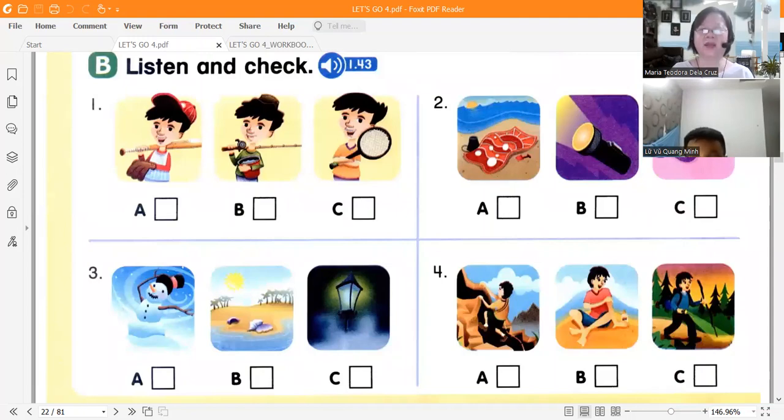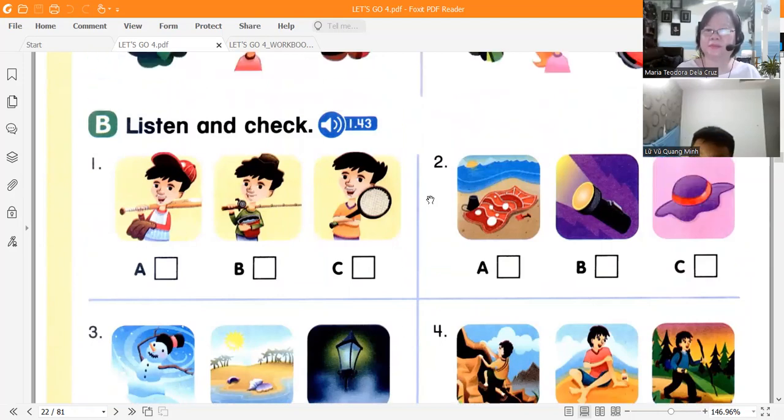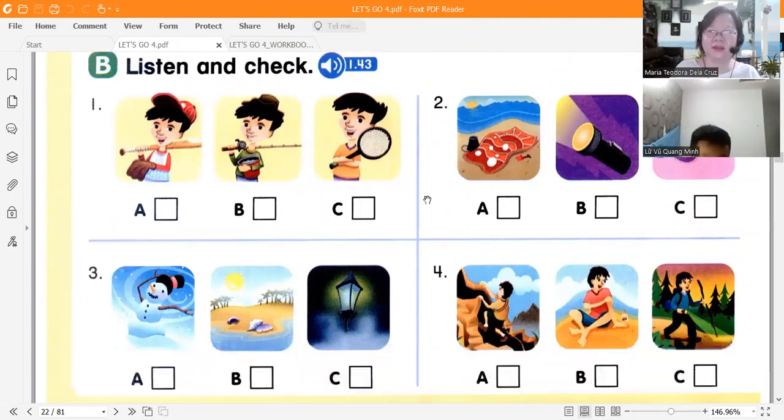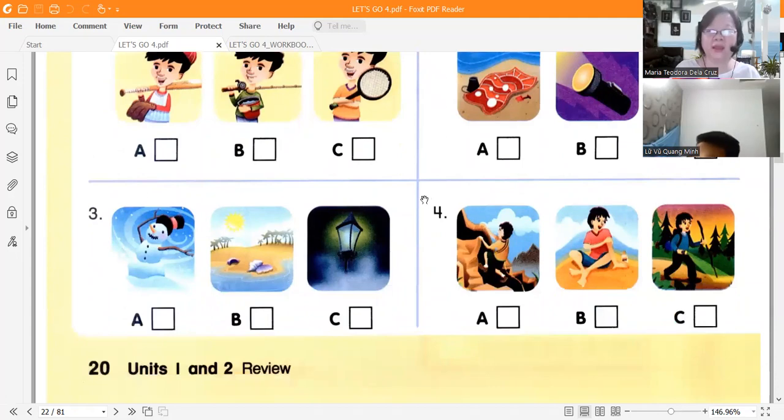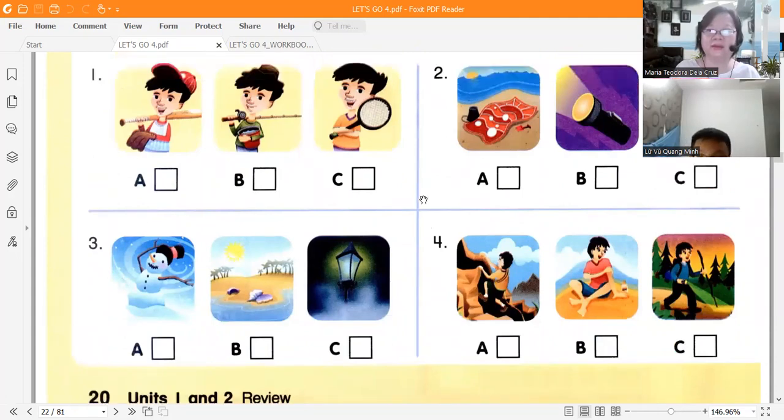All right, so let's check. Number one, letter B. Good. Number two, letter I. Okay, say it again. Letter A. Good. Letter A. Number three, letter C.